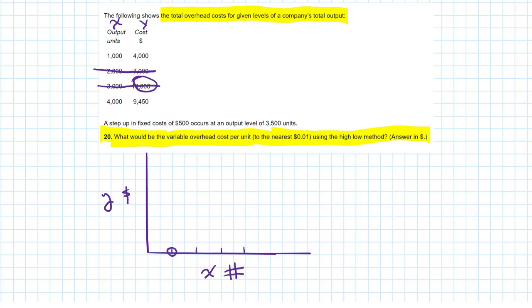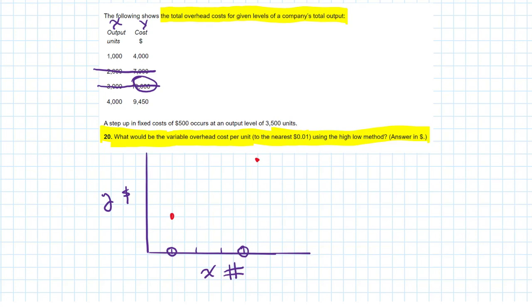We've got a low of 1,000, a high of 4,000, and we have some corresponding total costs. At 1,000 units, we get 4,000 in total costs. I'll set that here. And then at 4,000 units, we get 9,450 total cost. And I'll set that here approximately. Without any other information, we would assume that the line looks like this, the fixed cost somewhere down here.